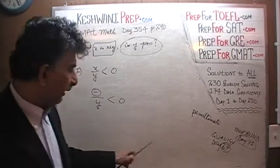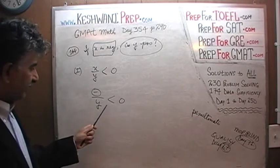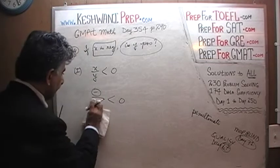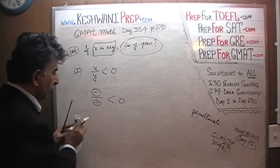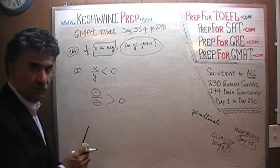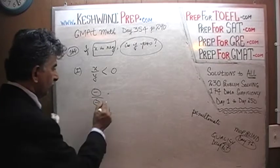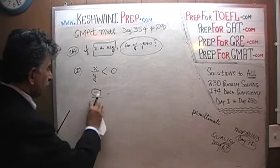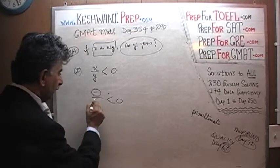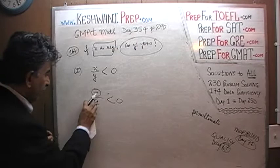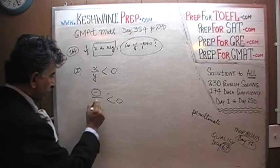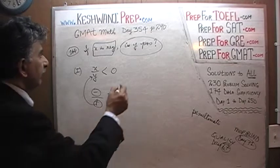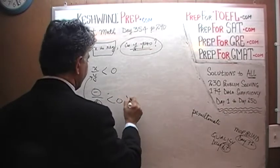The only way that is possible — y cannot be negative because negative divided by negative would be positive. Because we are told that x divided by y is less than 0, the y that we are looking at has to be positive. So are we able to answer the question? Is y positive? The answer is yes, y is positive.